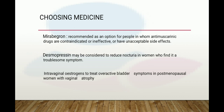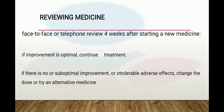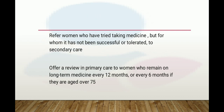Desmopressin may be considered to reduce nocturia in women who find it troublesome. Intravaginal estrogen can treat overactive symptoms in post-menopausal women with vaginal atrophy. Review medicines face-to-face or by telephone four weeks after starting; if improvement is optimal, continue treatment; if there is no or suboptimal improvement or intolerable adverse effects, change dose or try an alternative medicine. Refer women who have tried medicines without success to secondary care. Offer primary care review every 12 months, or every 6 months if aged over 75.